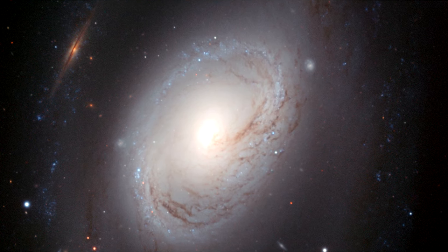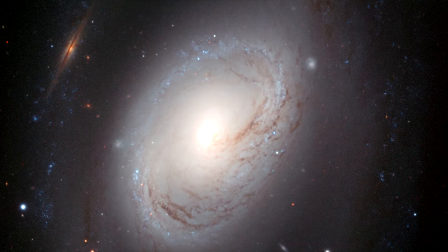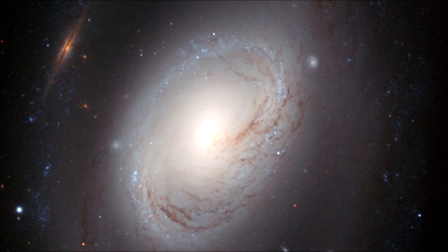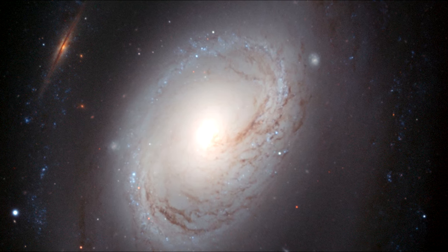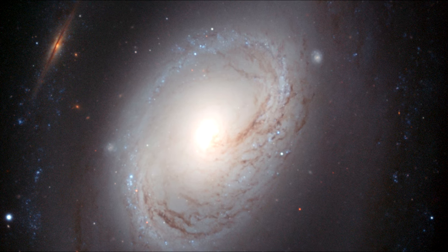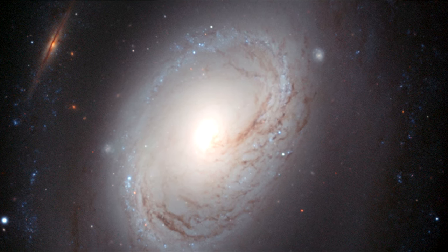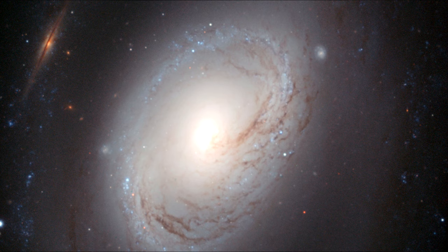The galaxy's core is compact but glowing, and the dark dust lanes around it move in a delicate swirl towards the nucleus. The spiral arms' patchy rings of young blue stars are like a necklace of blue pearls.